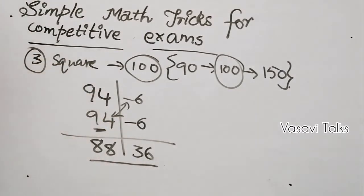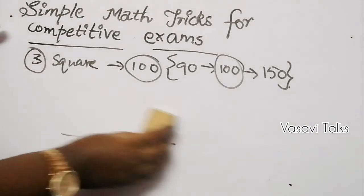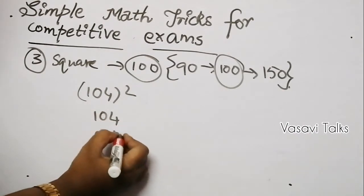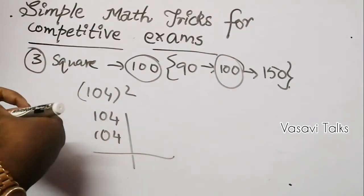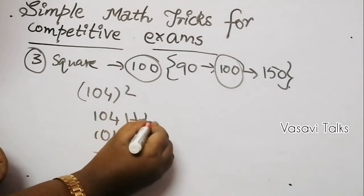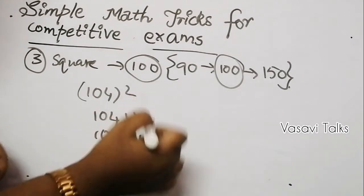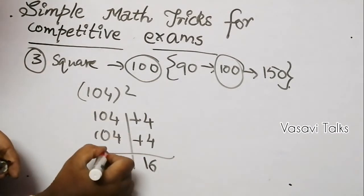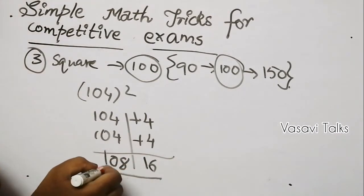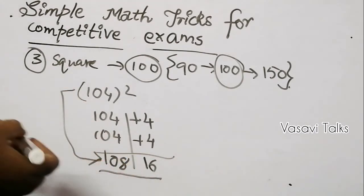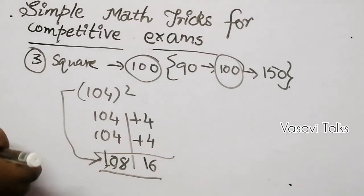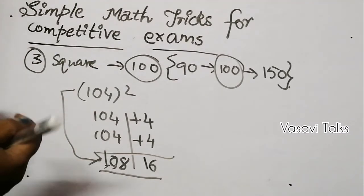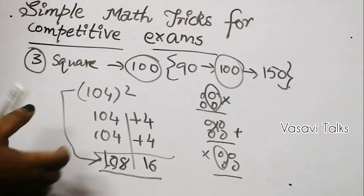Let's try 104 squared. Since 104 is 4 more than 100, we add 4: 104 plus 4 is 108. Then multiply 4 times 4 is 16. So 104 squared is 10816. That's the answer. I hope this video is useful. Thank you for watching patiently.